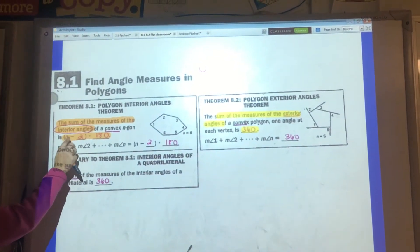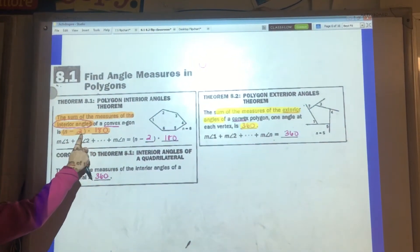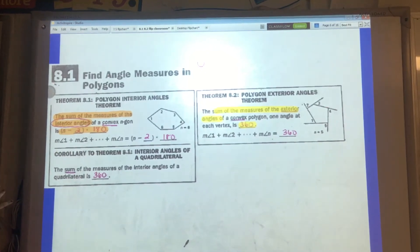So if you're looking for the sum of all the angles, take the number of the angles minus 2 times 180, that'll give you the sum of all the angles.